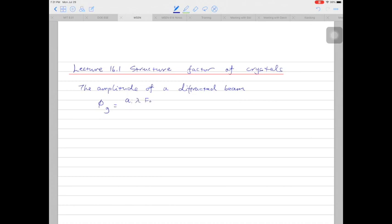then sigma n exponential minus 2 pi i k rn multiplied by exponential 2 pi i k d r. This is a rather complicated equation here.